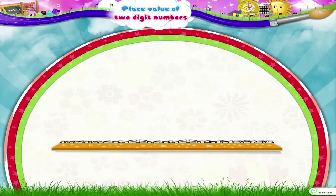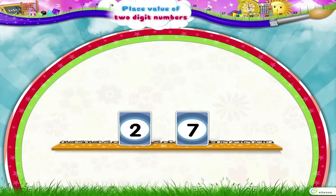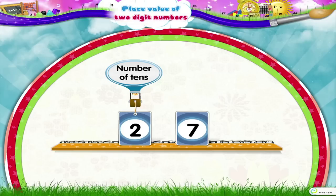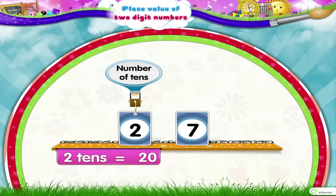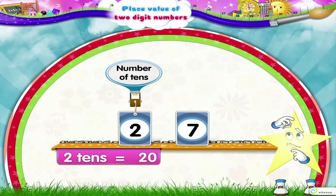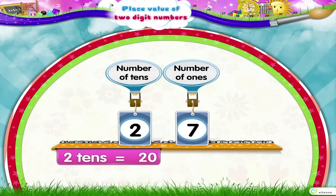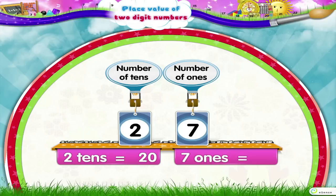Let us take a look at the next number, 27. Here, what does digit 2 show? The digit 2 shows the number of tens. So its place value is 2 tens, that is 20. What about the digit 7? Digit 7 shows the number of ones. So its place value is 7 ones, that is 7.